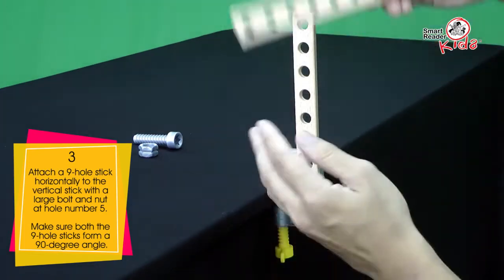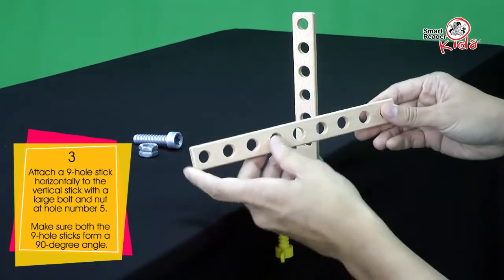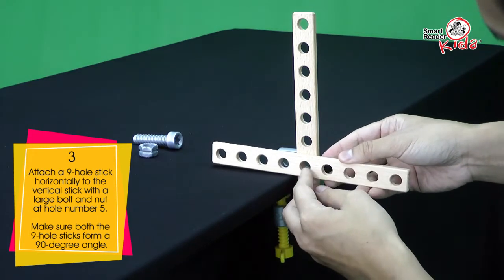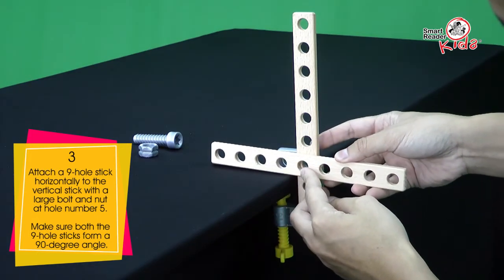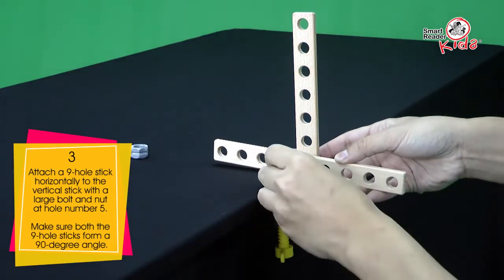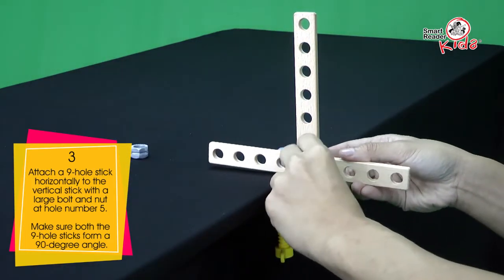Attach a 9-hole stick horizontally to the vertical stick with a large bolt and nut at hole number 5. Make sure both the 9-hole sticks form a 90-degree angle.